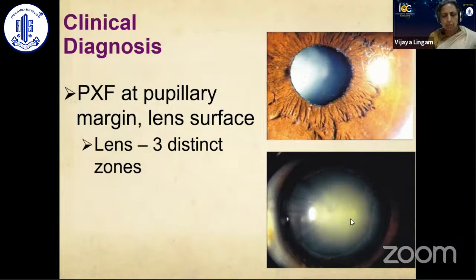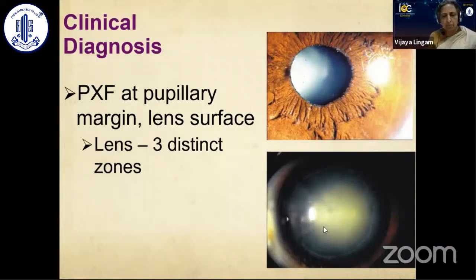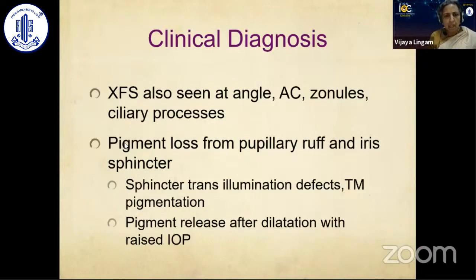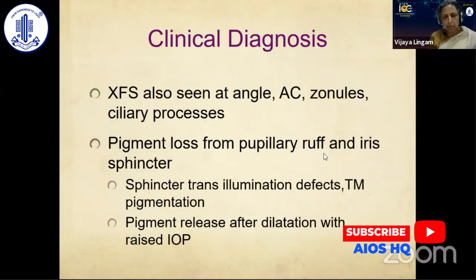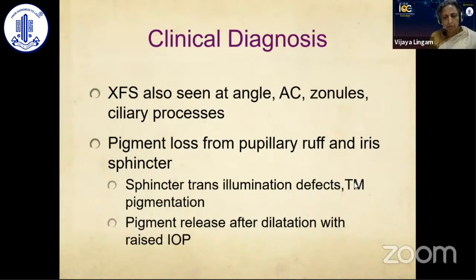This pattern occurs mainly because of pupillary rubbing on the lens surface. With dilation and constriction, the material gets washed away, giving this characteristic picture on post-dilated examination. Exfoliation material is also seen in the angle, anterior chamber, zonules, and ciliary processes. It causes pigment loss from the pupillary ruff and iris sphincter, resulting in sphincter transillumination defects. The released pigment accumulates in the trabecular meshwork.